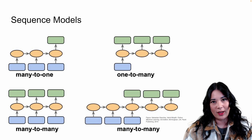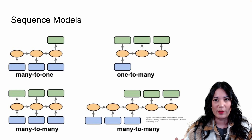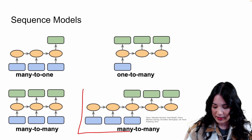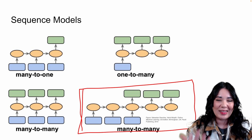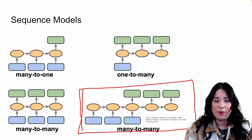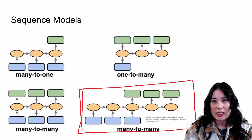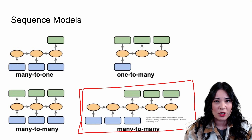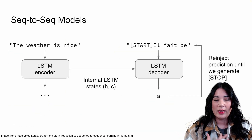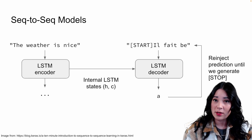In our Recurrent Neural Network lectures, we talked about different ways we might want to use sequences when building deep learning models. One of the really common ones might be machine translation, where we put in a sequence to a model and ask it to create a hidden representation of the meaning of that sentence, then ask a different part to create a new sequence — a sequence-to-sequence task.